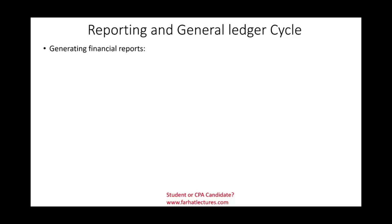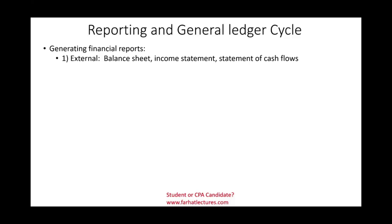The reporting and general ledger cycle is when we generate financial reports. There are two types: one for external users — investors and creditors — which includes the balance sheet, income statement, statement of cash flows, and statement of stockholders' equity. We also generate internal reports to run the company, such as budgets, variance reports, cost of goods manufactured, and job order costing.